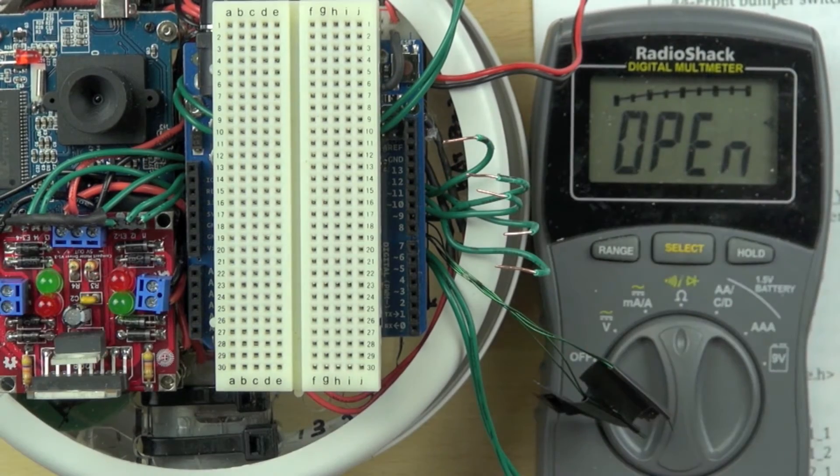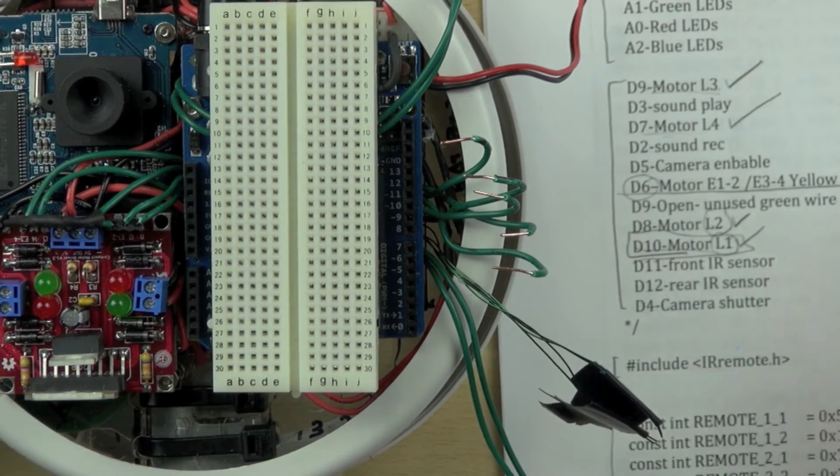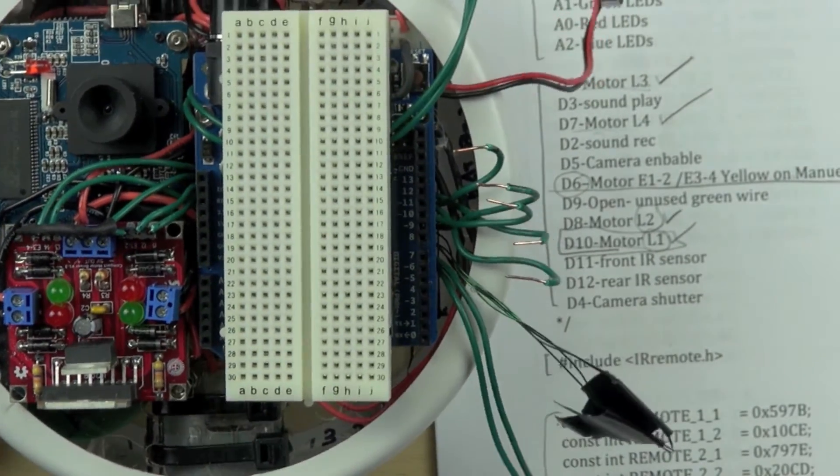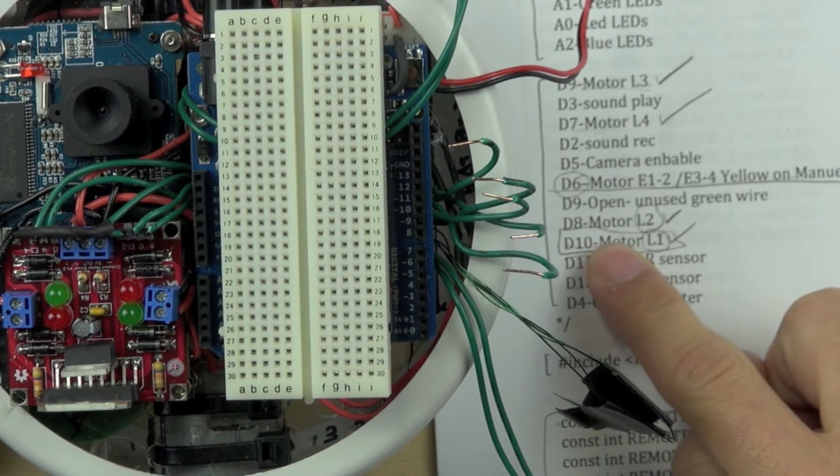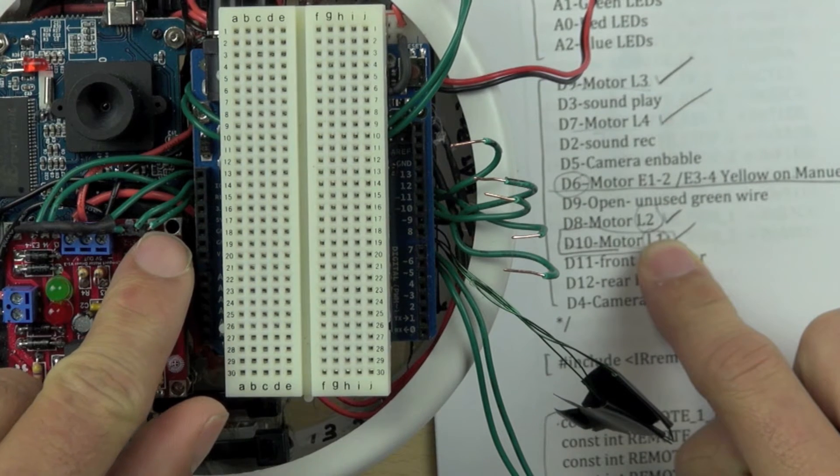We can use our multimeter to tell us which wire is which. We're going to take that wire there, which is our L1 wire. We've already created a list of where we want our pinouts to go, and our L1 wire is going to go to pin D10.